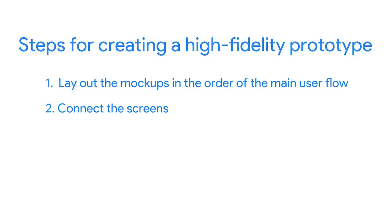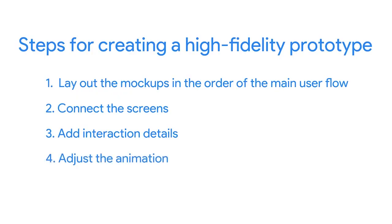Two, connect the screens or elements within the screens. Three, add interaction details. In both Figma and Adobe XD, the trigger defines what type of interaction will cause the prototype to advance forward. You'll probably stick to interactions like tap for your dedicated mobile app or mouse click for your responsive website later. Four, adjust the animation — the animation settings determine how the prototype moves from one screen to the other. Five, complete this process for all of the screens in your dedicated mobile app.